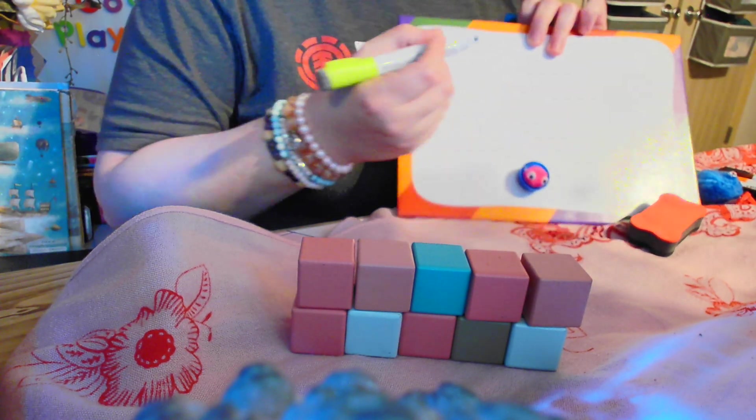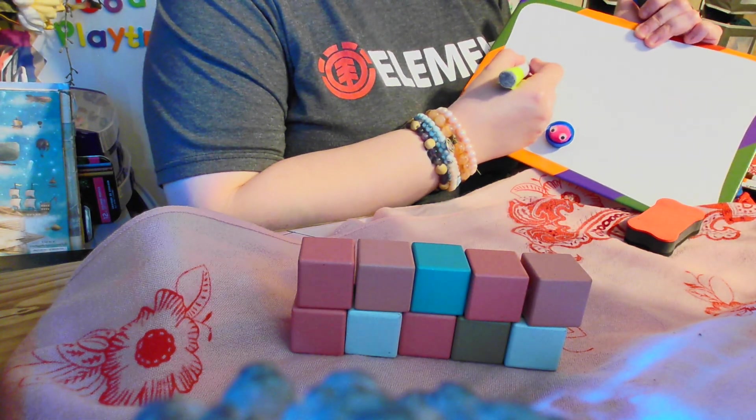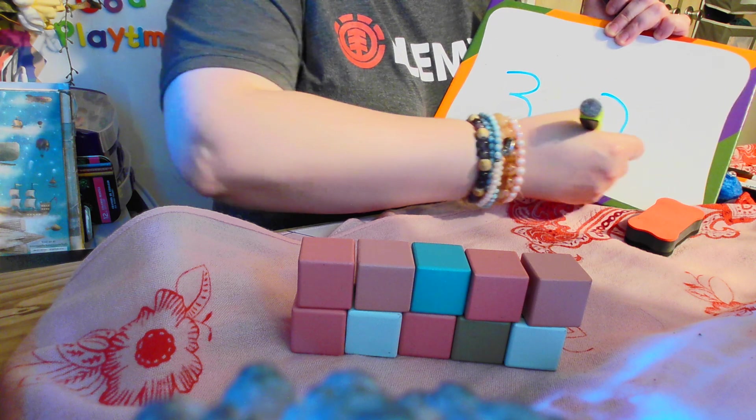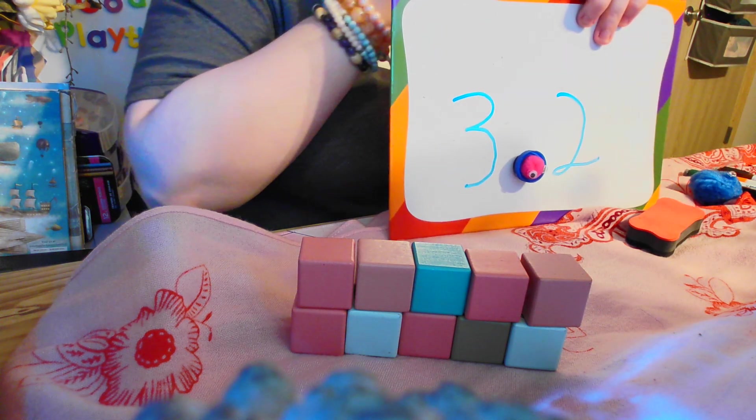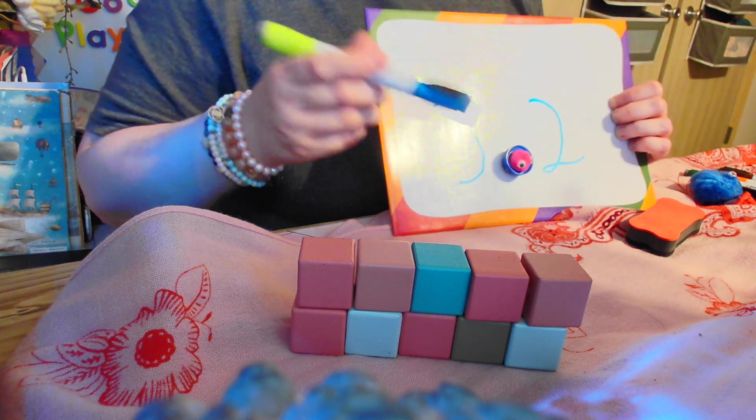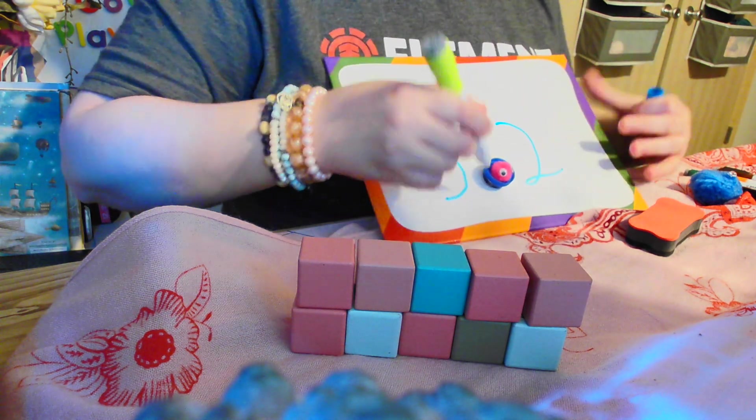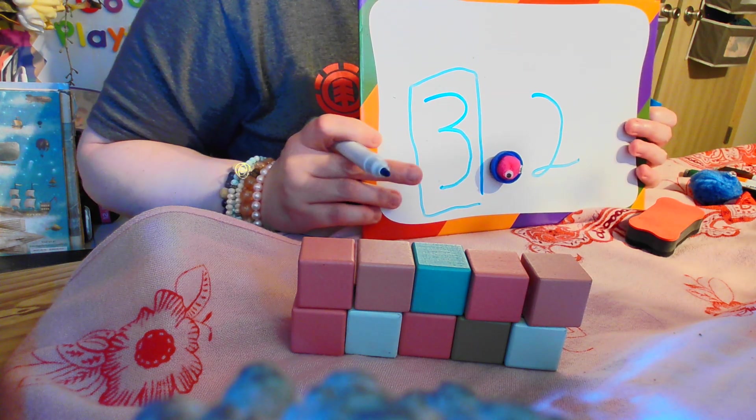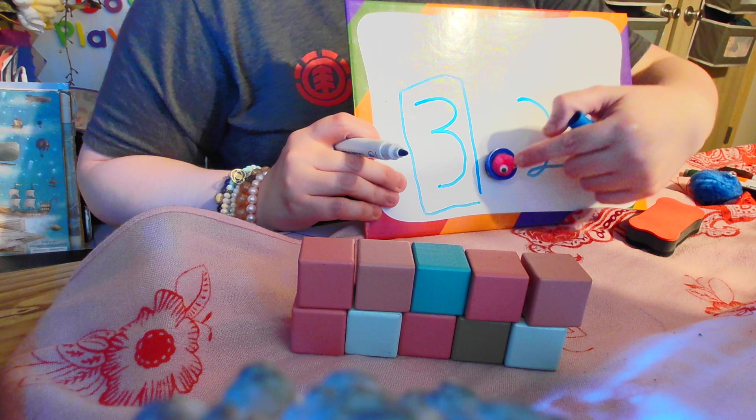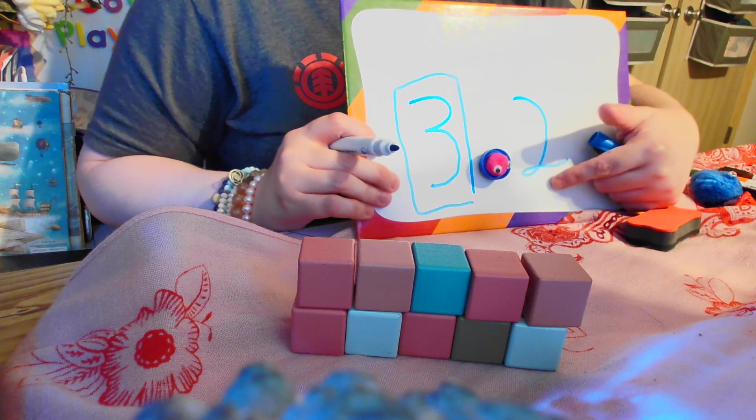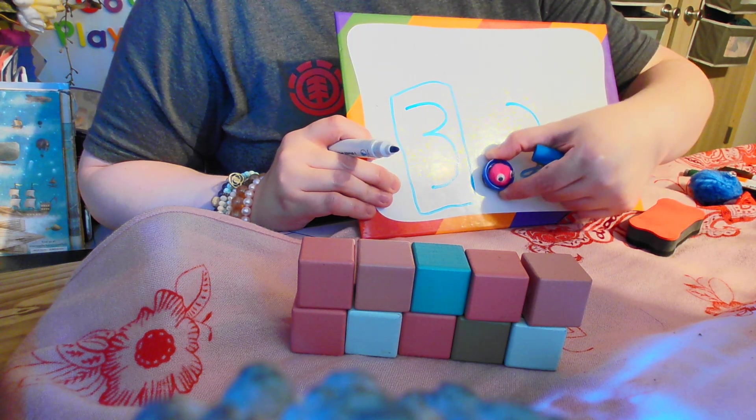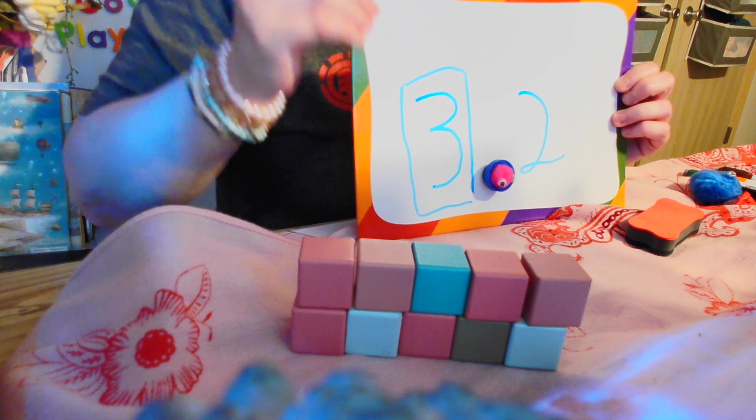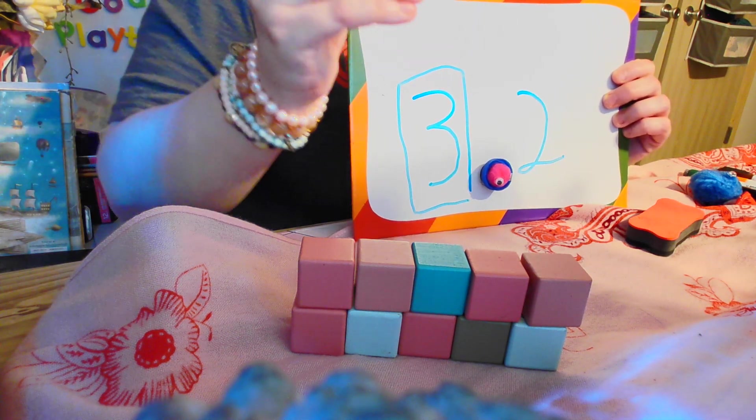What if we had the number 3.2? Well, what is that? This means we have the whole number 3. In fact, we're going to put that number 3 in a box. It means we have the whole number 3, but we also have a part of a number next to it, which is why our little decimal point is here. This means we have 3, but we don't quite have the next number. We don't have 4.